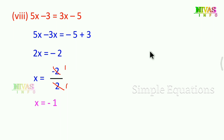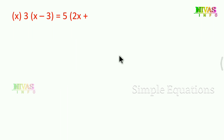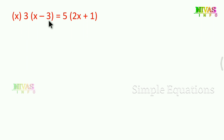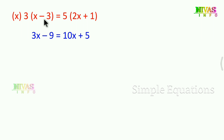Next question: 3 into bracket x minus 3 end bracket is equal to 5 into bracket 2x plus 1 end bracket. There are two brackets, each with one constant and one variable. We perform direct multiplication on both sides: 3 into x gives 3x, and 3 into 3 gives 9, so left side is 3x minus 9.